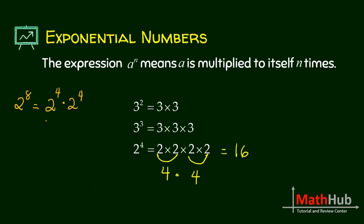But we already know that 2 to the 4 is 16. So it's just a matter of multiplying 16 and 16. So what is that, 256.